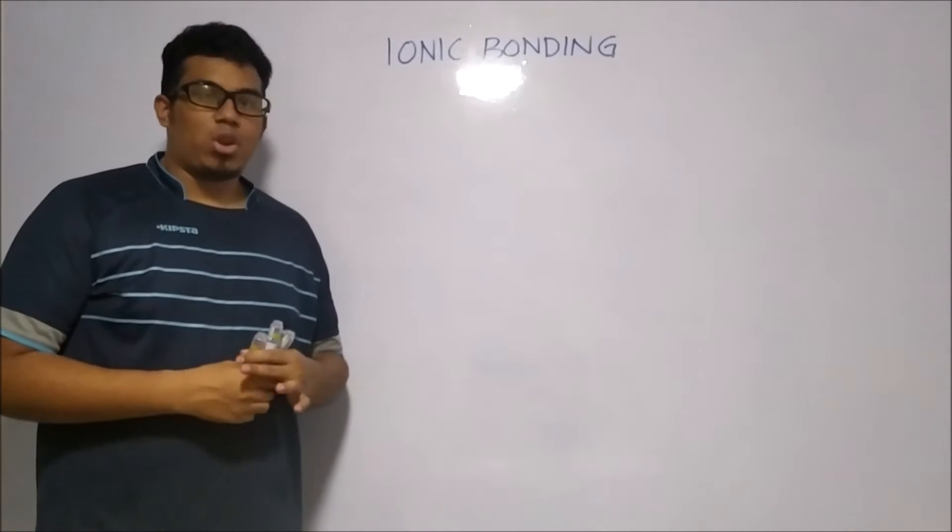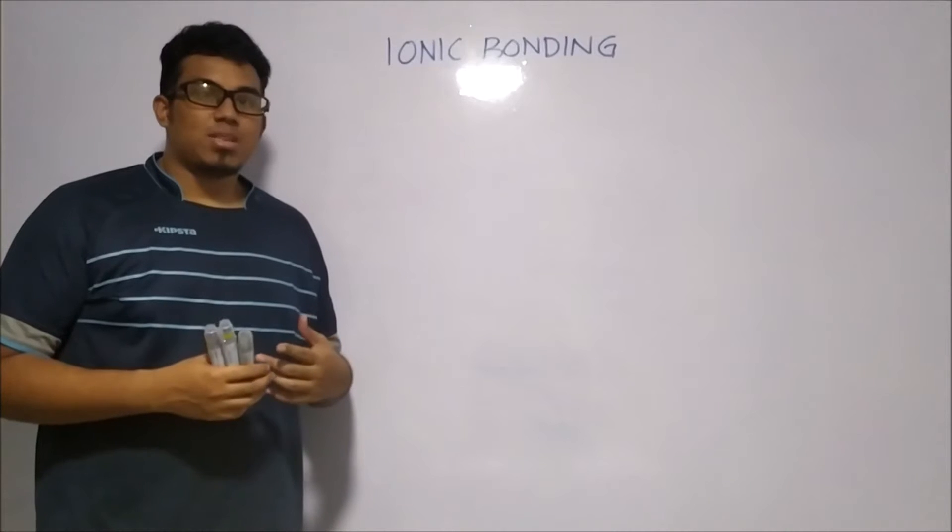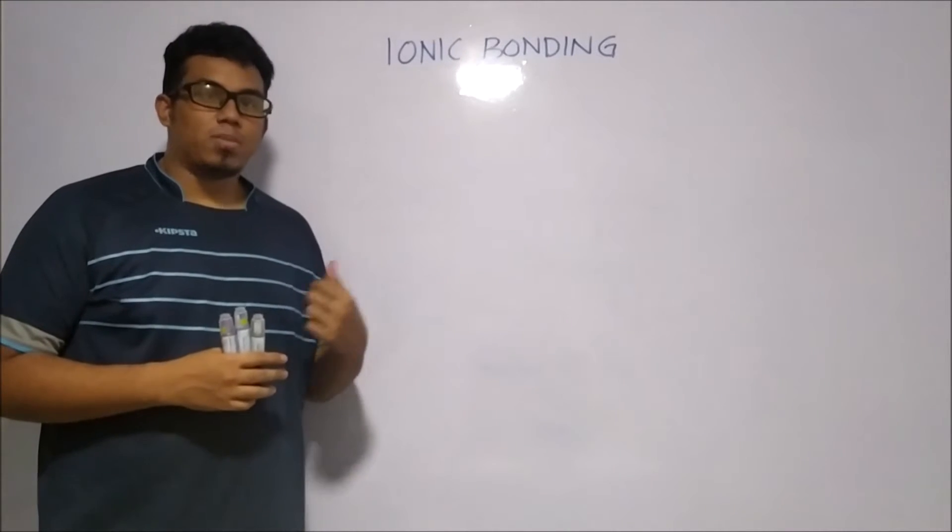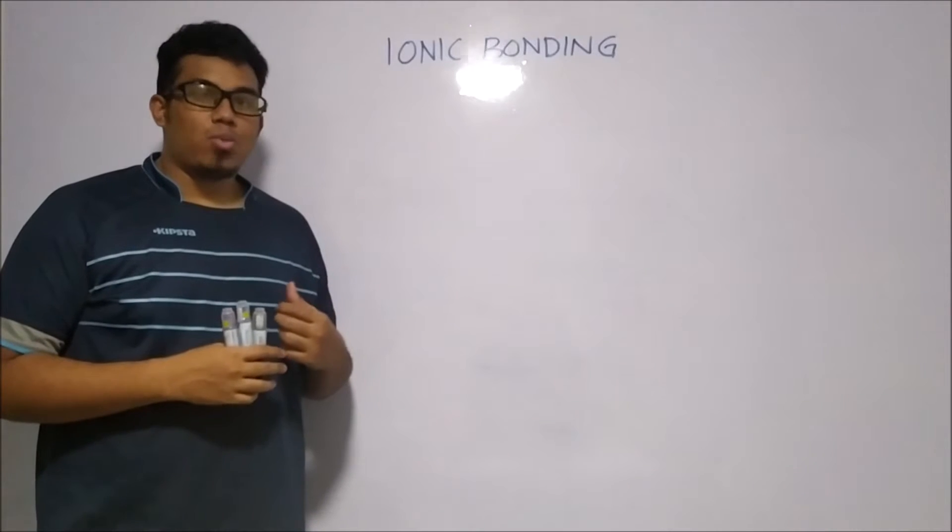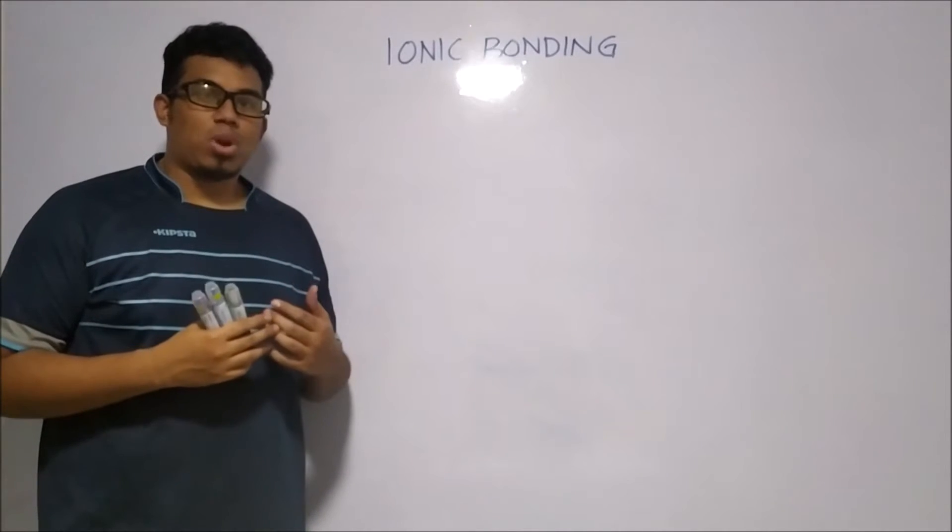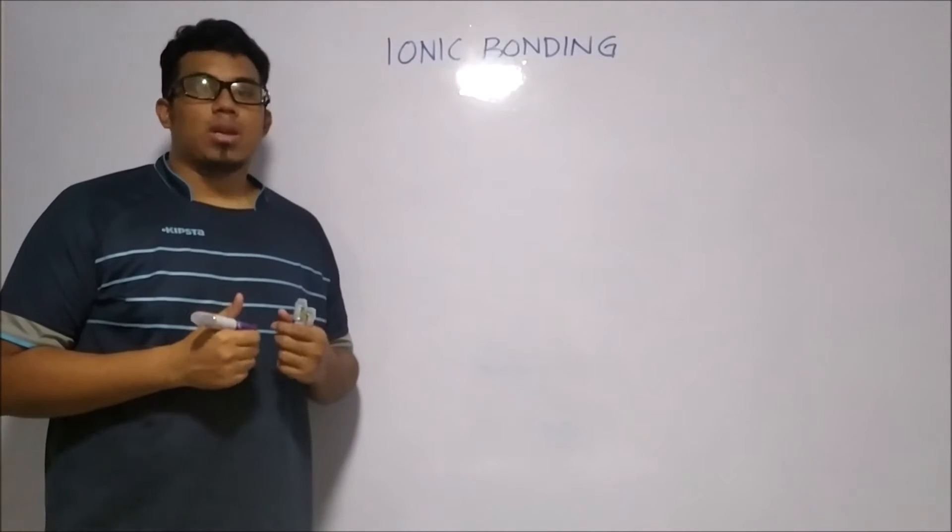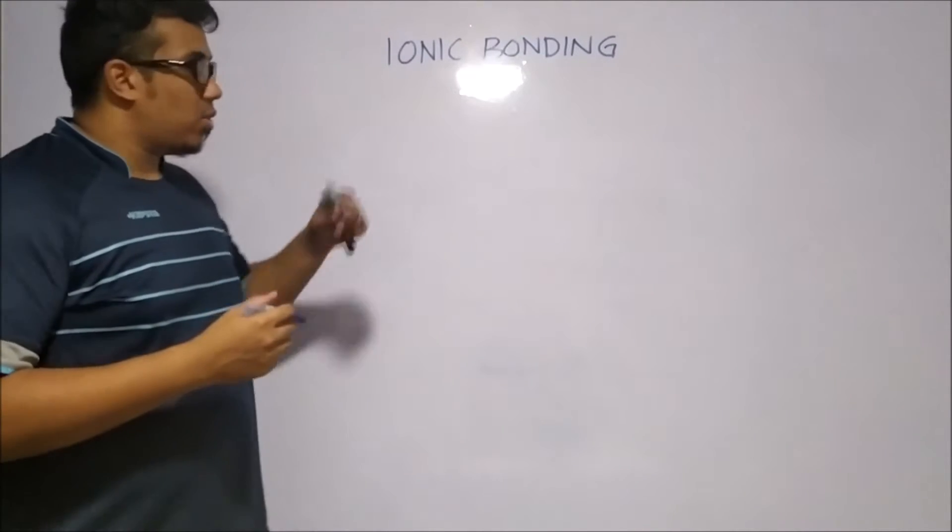Today we'll be continuing on the topic of ionic bonding. In the previous lesson, we learned how to draw dot and cross diagrams. Today we'll be looking at what forms an ionic bond, and then we'll go through a few examples of how to write down a chemical formula for ions, including polyatomic ions. So let's start with ionic bonding.